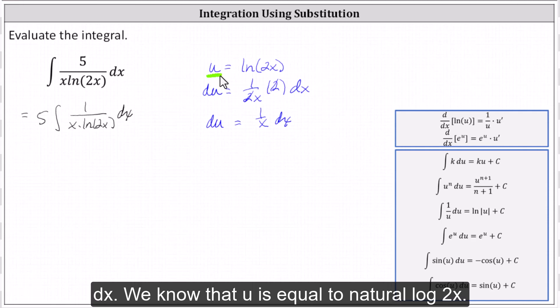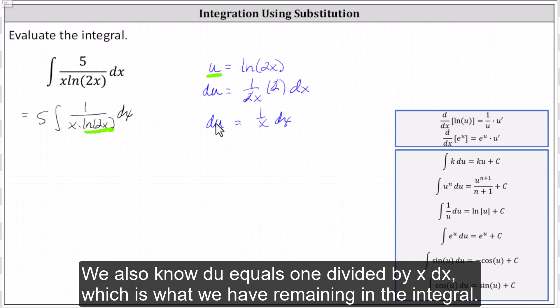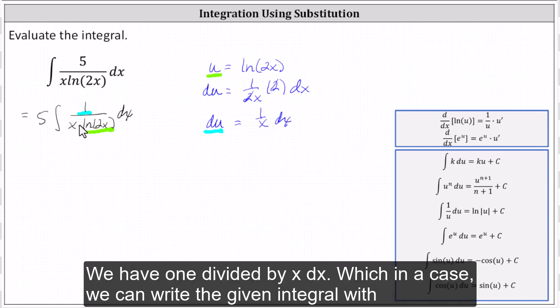We know that u is equal to natural log 2x. We also know du equals one divided by x dx, which is what we have remaining in the integral.